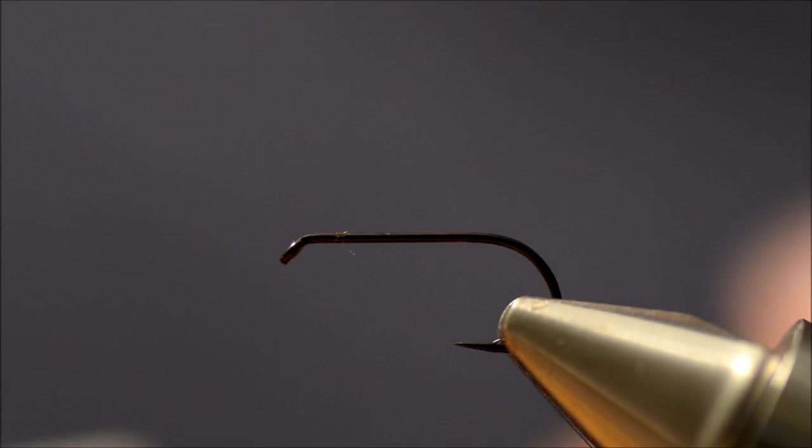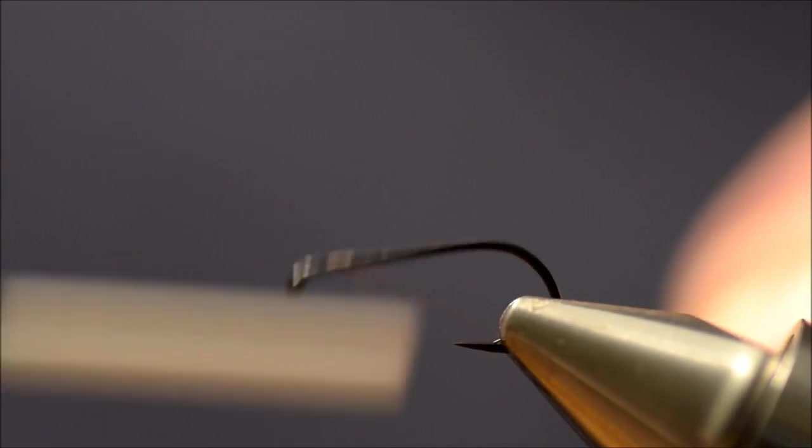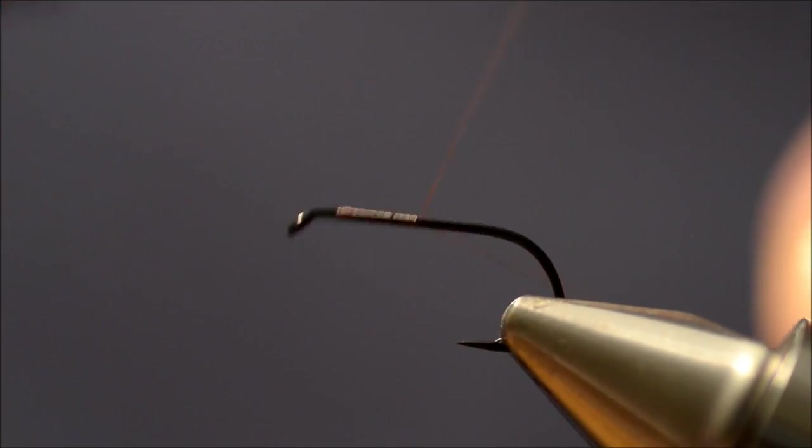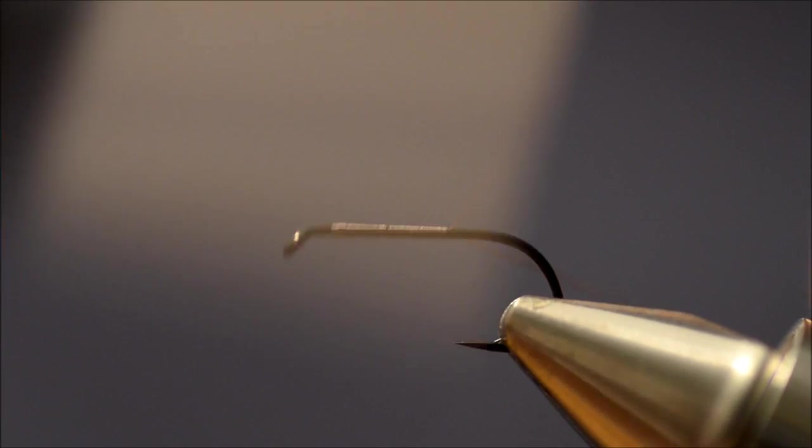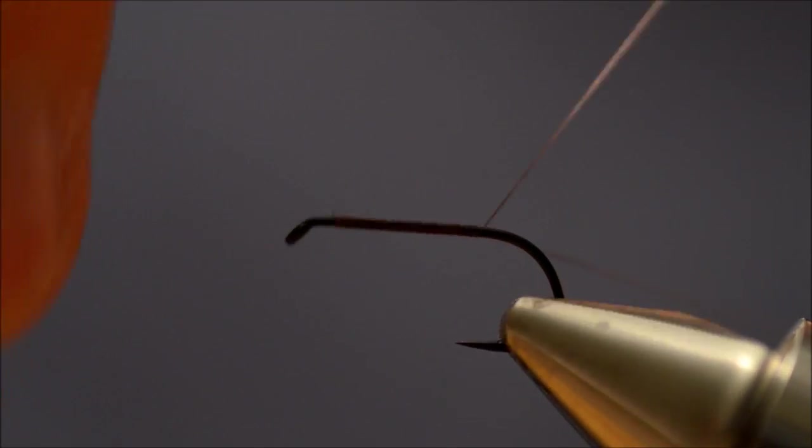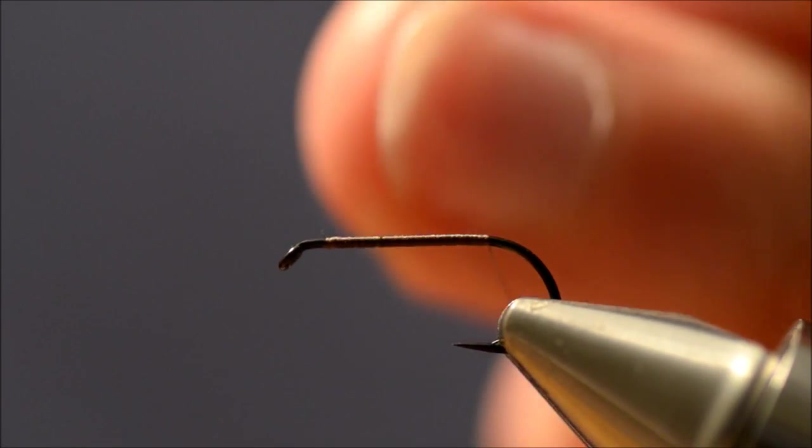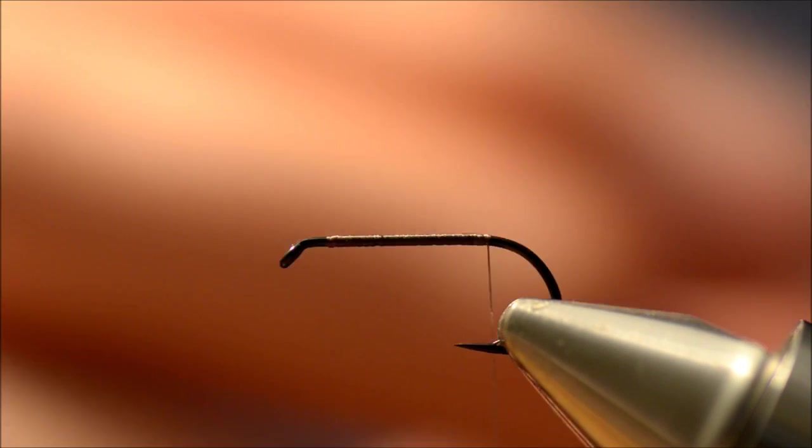Now I'm going to tie the pheasant tail nymph. The hook I'm using is a TMC 102Y size 13, the thread is a brown bonacci.